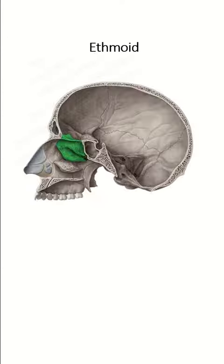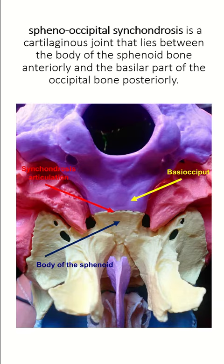The most unseen, fragile, and irregular bone of the skull is the ethmoid. The largest primary cartilaginous joint of the skull is the sphenooccipital synchondrosis — the cartilaginous joint located between the body of the sphenoid anteriorly and the basilar part of the occipital bone posteriorly.